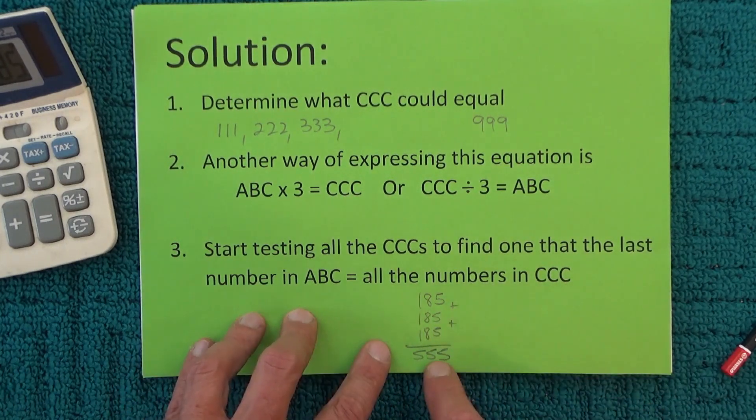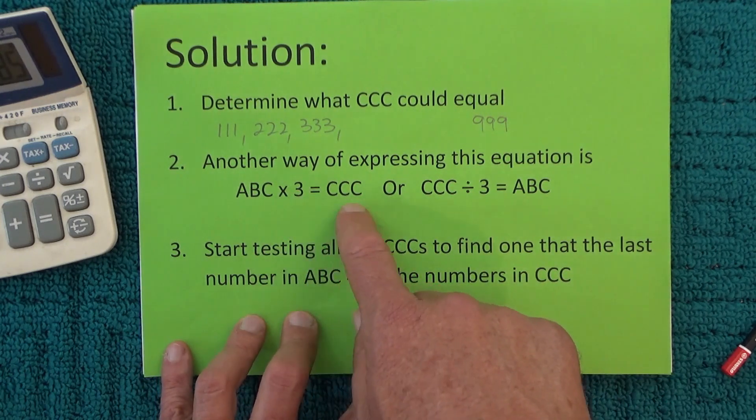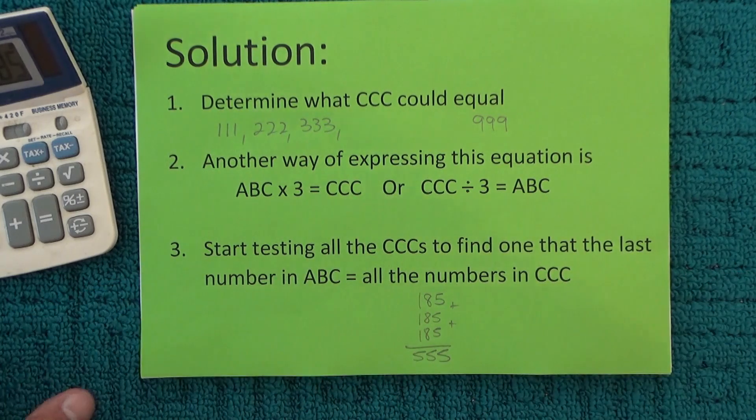So we found the answer: ABC is 185 and CCC is 555.